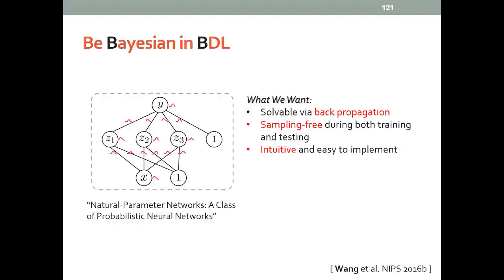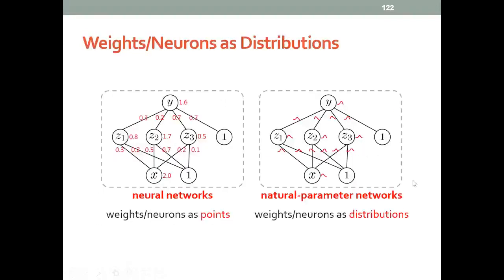Unfortunately, no previous work can satisfy all these requirements. What we propose is treating the weights and neurons as distributions rather than just numbers or points in high dimensional space. We allow these distributions to feed forward and backprop across all layers.